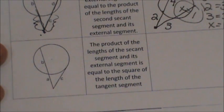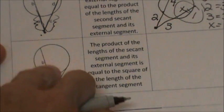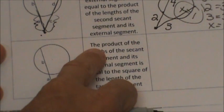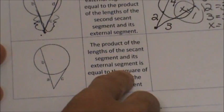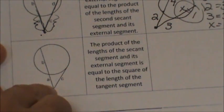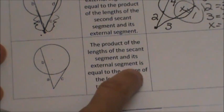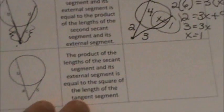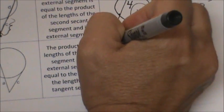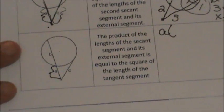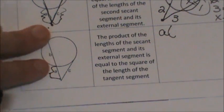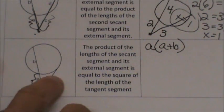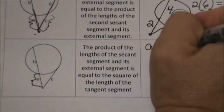The fourth case has one secant and one tangent. The outside times the whole of the secant segment is equal to the square of the tangent length. The formula is: a times (a plus b) equals c squared, where a is the exterior part of the secant, (a plus b) is the full secant length, and c is the tangent segment.